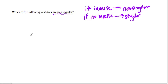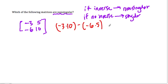So we have a first one, it's negative 3, 5, negative 6, 10. What is the discriminant of that? Well, it would be negative 3 times 10 minus negative 6 times 5.